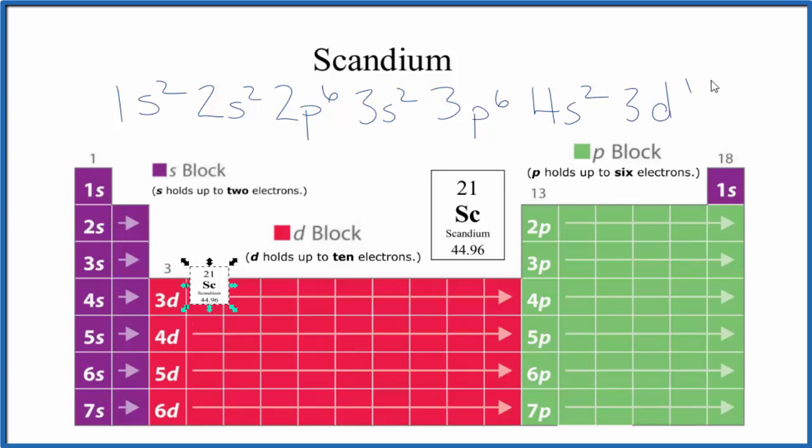You'll often see the 4s2 here put after the 3d1 - that's okay as well. Often we'll write the condensed notation, the condensed electron notation. So we go back and we find the noble gas that was before scandium.